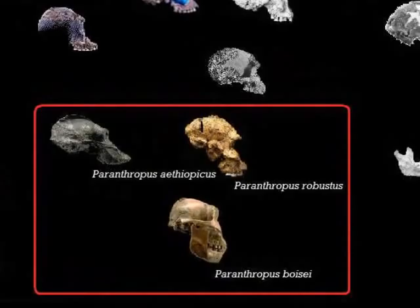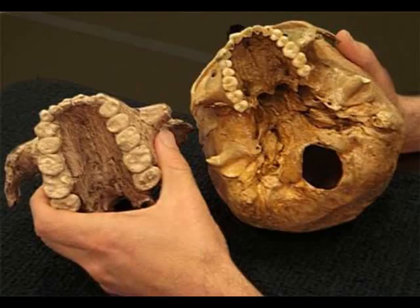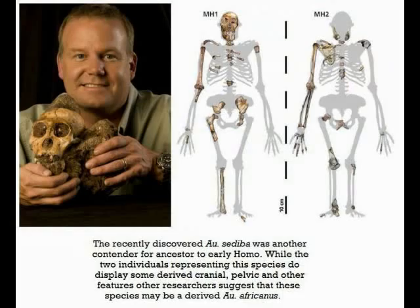Included in these descendants are what used to be referred to as robust australopithecines, but are now given their own genus, Paranthropus. These animals are known primarily from their skulls and possess exaggerated sagittal crests, enlarged nuchal tori, broad faces, large molars, and other traits which would make them look similar to a sort of bipedal savanna gorilla.